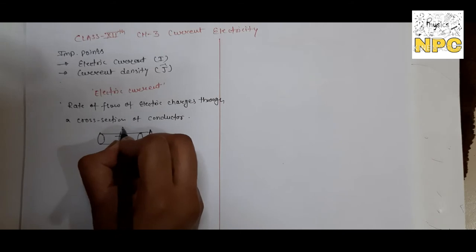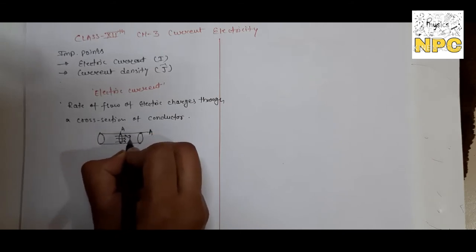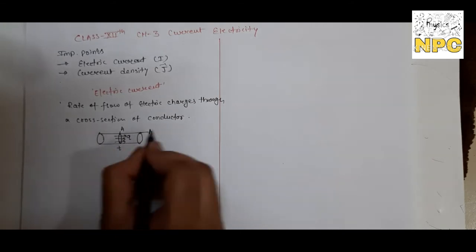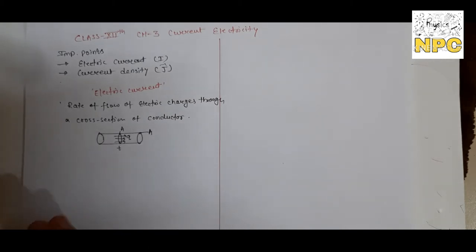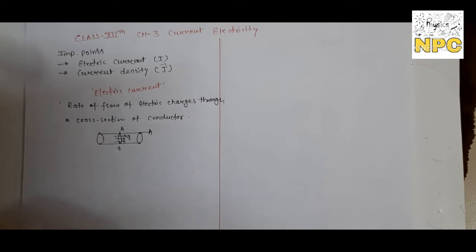A conductor has a cross-sectional area, and charge Q flows through it in time T. So we say that is the electric current. Electric current means the flow of electric charge in a particular time. Time plays a very important role - if you remove the time quantity, the quantity of electric current will not exist. Electric current defines the value of charges in a particular time.